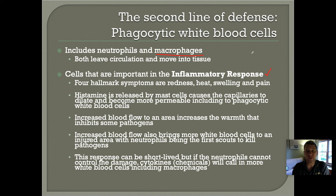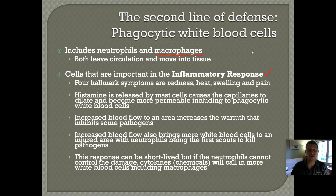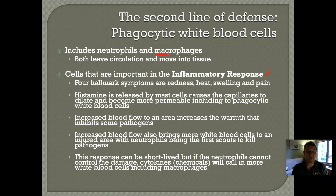The four symptoms of the inflammatory response are often considered to be symptoms of colds and infections: redness, heat, swelling, and pain. A chemical called histamine is released by cells, which causes the capillaries to dilate and become more permeable to macrophages, the phagocytic white blood cells. The increased blood flow to that area increases the warmth, so it gets red and warm, which can in itself inhibit some bacteria and viruses. The increased blood flow also brings more white blood cells to the area, and the neutrophils act like scouts that find the first invaders and start to wipe them out.